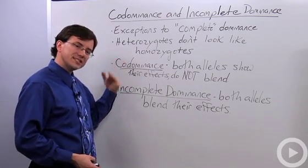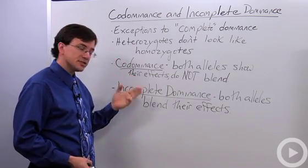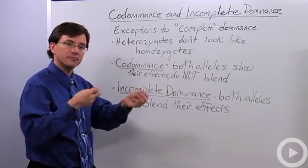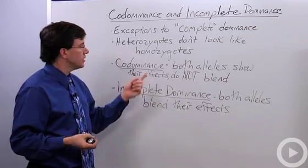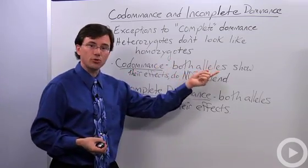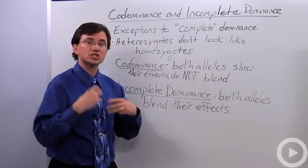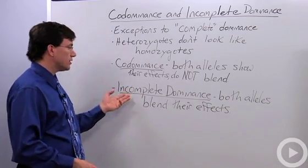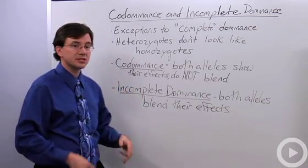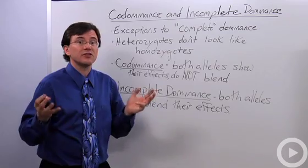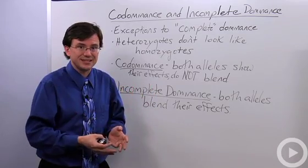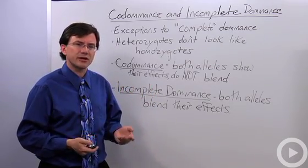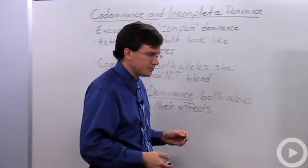So what's the difference between codominance and incomplete dominance? It's how they produce this effect. With codominance, you will see both alleles showing their effects but not blending, whereas with incomplete dominance, you see both alleles' effects but they've been blended. That distinction can sometimes be hard to figure out, so let me give you a couple of concrete examples.